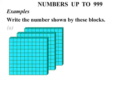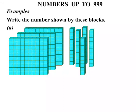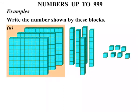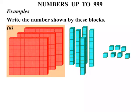Examples. Write the number shown by these blocks. Part A: we have a number of flats, a number of longs, and then some shorts. Now let's see what we have. Remember, each flat is worth 100. So we are going to count in hundreds. 100, 200, 300. So 300 so far.